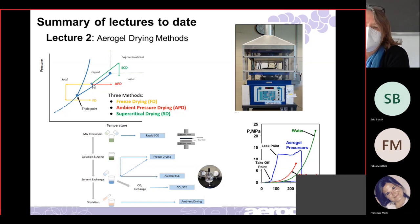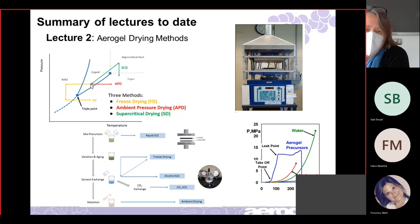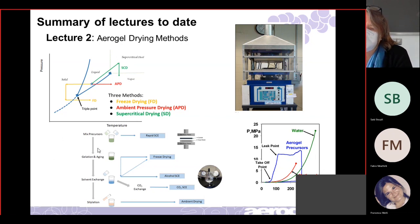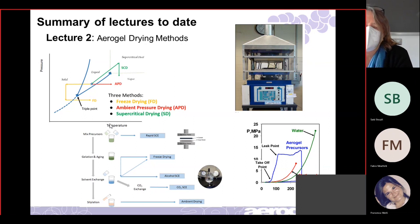I talked about three methods: freeze drying, where you go around the vaporization line; supercritical extraction, where you go up and over it — you're never in a situation with a phase boundary between liquid and vapor; and ambient pressure drying, but you have to treat your surface to do that.